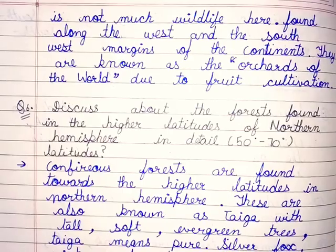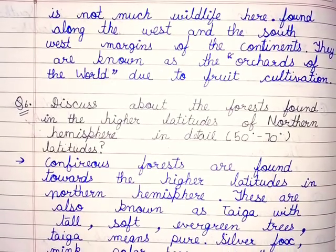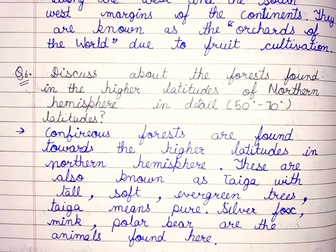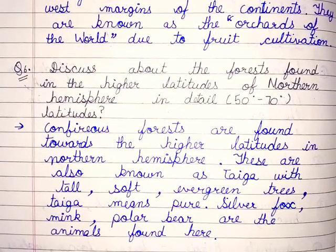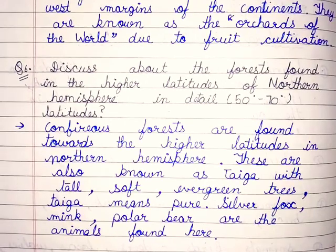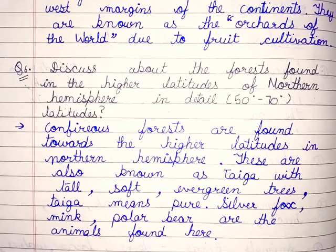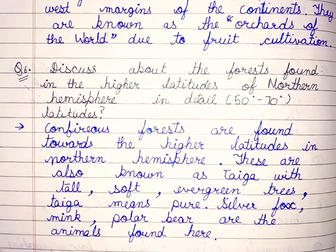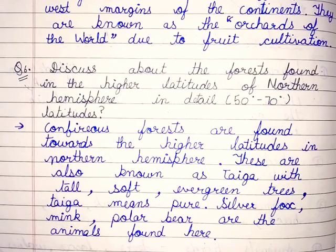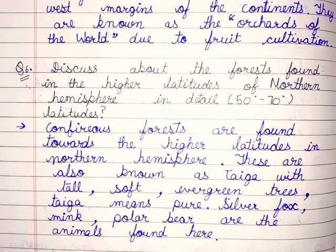Question number 6: discuss about the forests found in the higher latitudes of the northern hemisphere in detail. Answer: coniferous forests are found towards the higher latitudes in the northern hemisphere. These are also known as taiga, with tall, soft, evergreen trees. Taiga means pure. Silver fox, mink, and polar bear are the common animals found here.